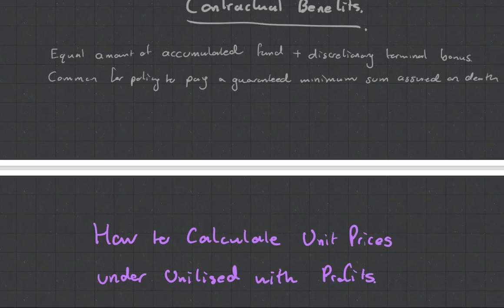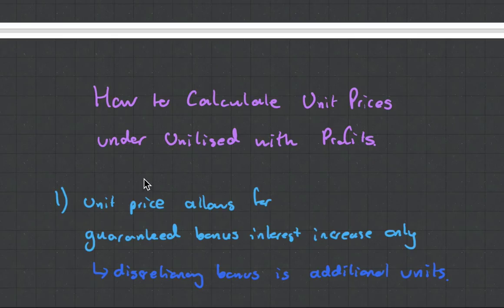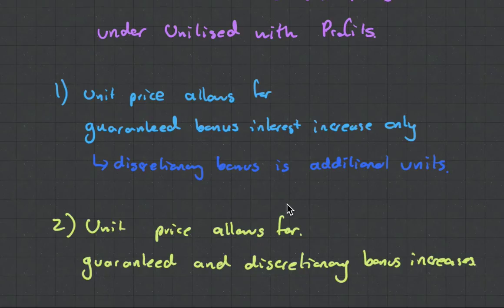This is maybe a little bit more about the methodology - how to calculate unit prices under unitized with profits. There's two ways. One way is your unit price allows for guaranteed bonuses and interest increases only, so when you receive a discretionary bonus it is in the form of additional units. Or two, the unit price allows for guarantees and discretionary bonus increases.